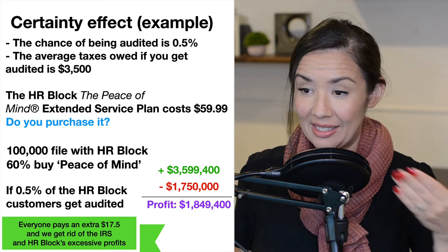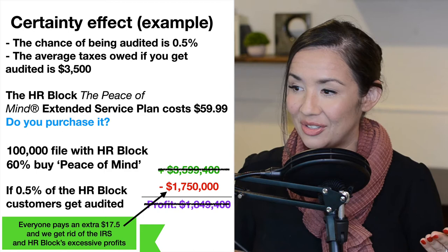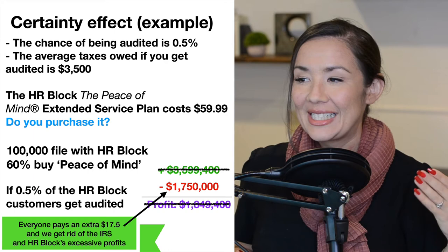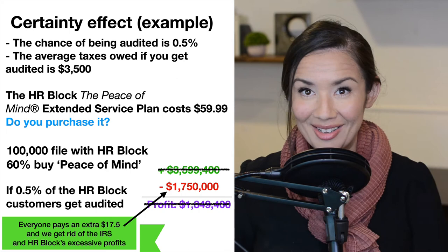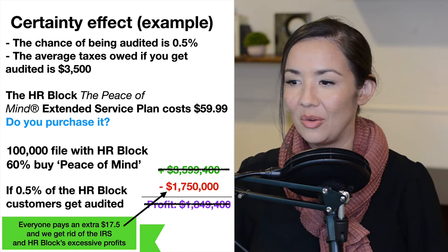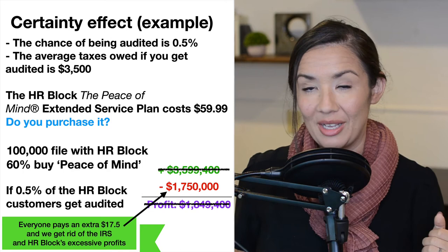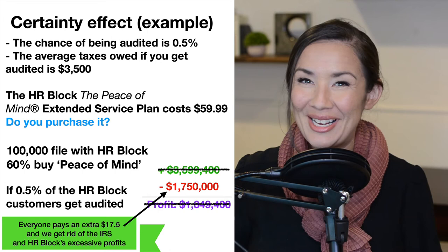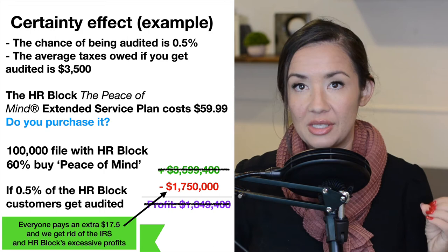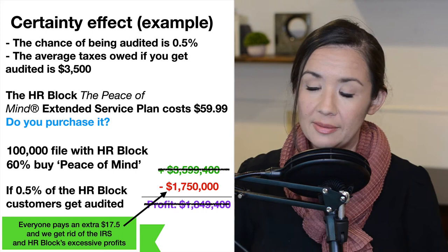Interestingly, if everyone simply paid $17.50, that would collectively cover the entire value owed to the IRS, eliminating the need for the plan. Before seeing these numbers broken down, you might think the Peace of Mind plan is a good idea — I've purchased it myself, and my husband almost always tries to get it. It feels good to know you have a 0% chance of being audited. They're selling the feeling of security and comfort, and we will pay a premium for that feeling.